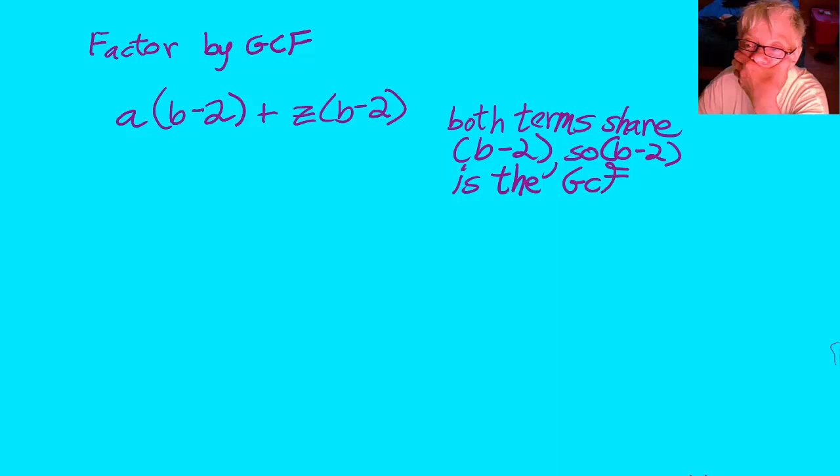So when we factor the problem, we write the GCF first: (b-2), and then we write the leftovers: (a+z). GCF, leftovers. I leave it up to you to multiply these and make sure the answer is right.